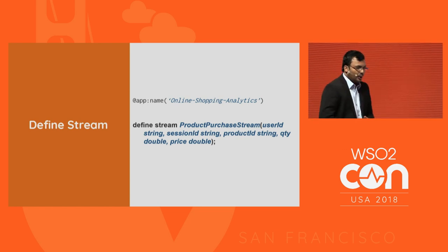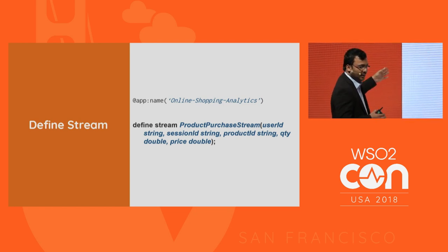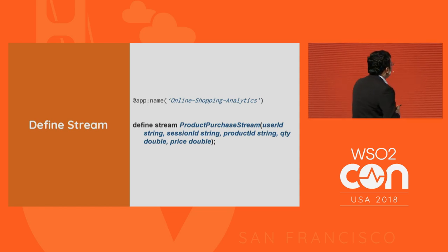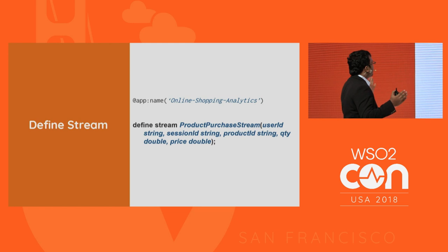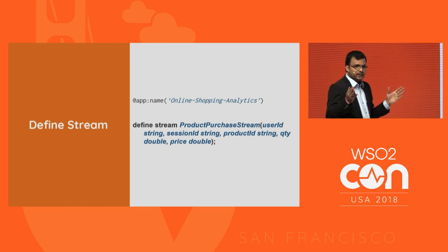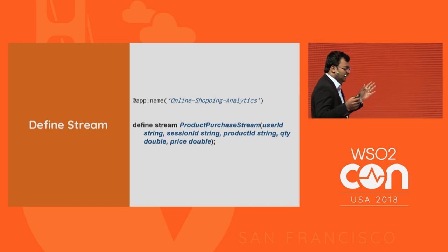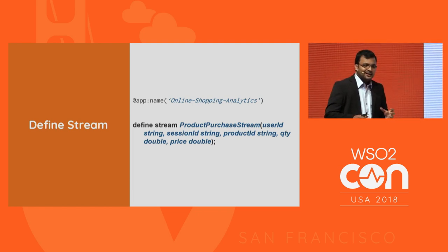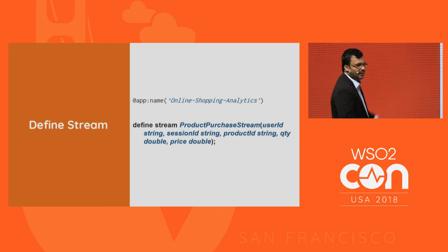Here is a simple example of how to define a stream in the streaming SQL world, written in CDSQL. We have a statement where we define a stream with a stream name, followed by the structure of the stream — the attribute names and types. In Stream Processor, the streaming application is called a Siddhi app, and we give it a name — in this case, 'online shopping analytics'.